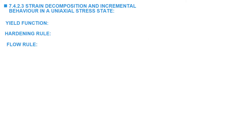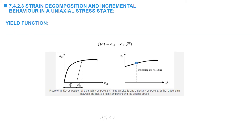We are now going to characterize the plasticity model using three main ingredients: yield function, hardening rule, and flow rule. The yield function is the function that decides whether the material behavior is elastic or plastic. In a uniaxial stress state, this yield function is equal to sigma_11 minus the yield stress as a function of the permanent plastic strain in the material.